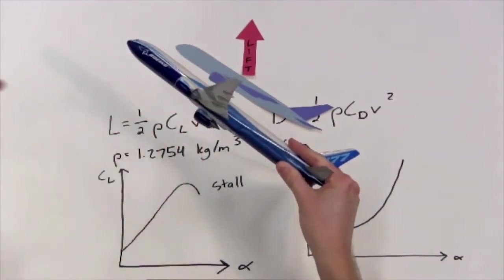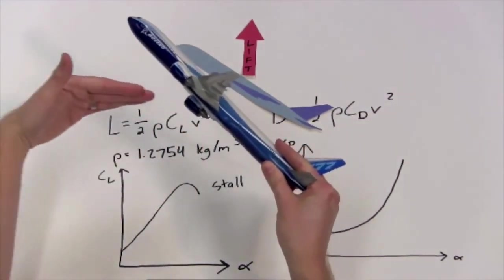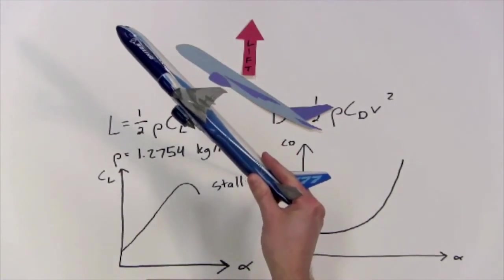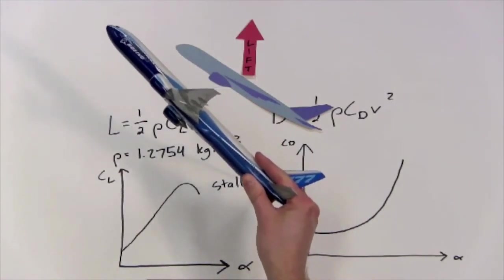So as the angle of attack increases - oh thank you - the coefficient of drag increases as well. Thank you very much. This is because as the aircraft is pitching up, there is more wing area perpendicular to the flow. Now this reminds me of something that we talked about earlier.